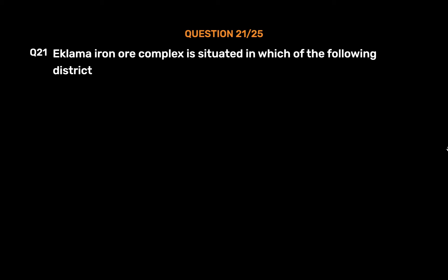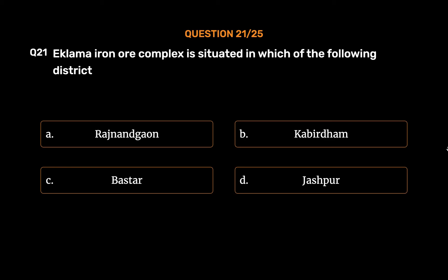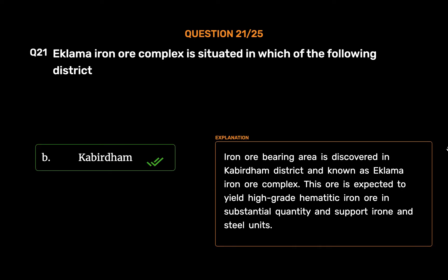Question No. 21: The Kalma Iron Ore Complex is situated in which of the following districts? Option A: Rajnandgaon. Option B: Kabirdham. Option C: Bastar. Option D: Jashpur. The correct answer is Option B: Kabirdham. The iron ore bearing area is discovered in Kabirdham district and is known as the Kalma Iron Ore Complex. This ore is expected to yield high-grade hematitic iron ore in substantial quantity and support iron and steel units.